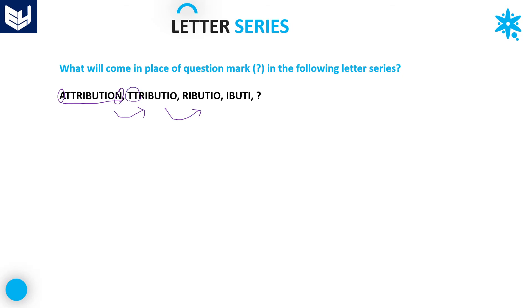From second to third, the first two letters — both T's — are eliminated, and the remaining letters are written in order: R-I-V-U-T-I-O. So initially from first to second the first letter and last letter are eliminated. Then from second to third the first two letters are eliminated. Now from third to fourth, the first letter and last letter are both eliminated again, giving the fourth term I-V-U-T-I.